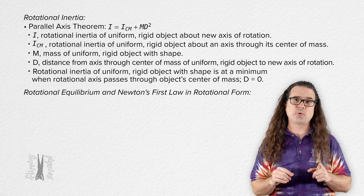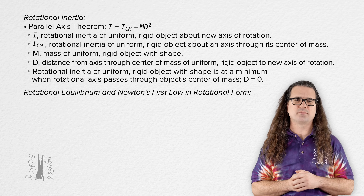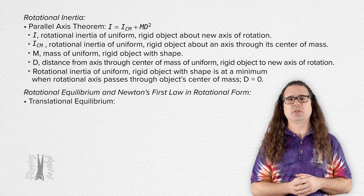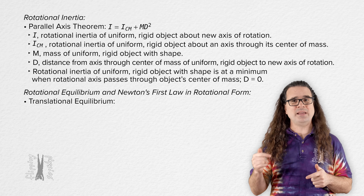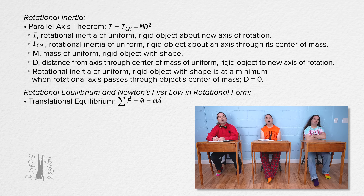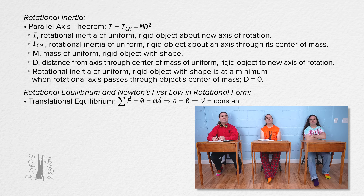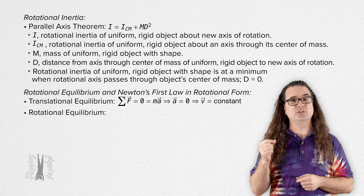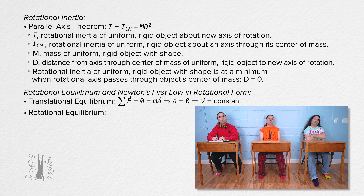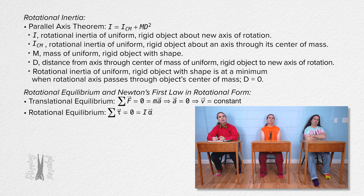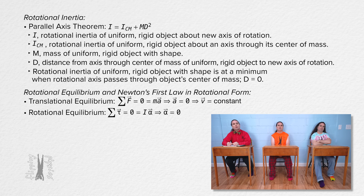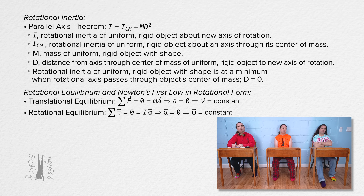Next up we have rotational equilibrium and Newton's first law in rotational form. First, let's review translational equilibrium: when a system is in translational equilibrium, the net force equals zero, so the acceleration is zero, so the linear velocity is constant. Bobby, tell me all of that only for rotational equilibrium instead. When a system is in rotational equilibrium, the net torque on the system equals zero, so the angular acceleration is zero, so the angular velocity of the system is constant.